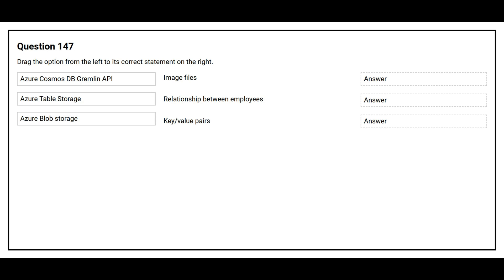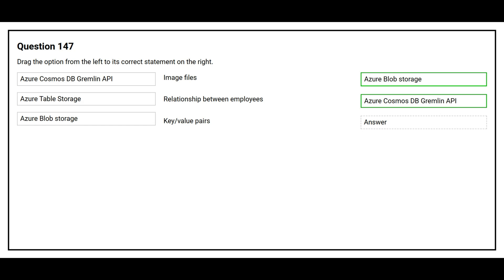Question number 147. Drag the option from the left to its correct statement on the right. Image Files — correct answer: Azure Blob Storage. Relationship between employees — correct answer: Azure Cosmos DB, Gremlin API. Key-Value Pairs — correct answer: Azure Table Storage.